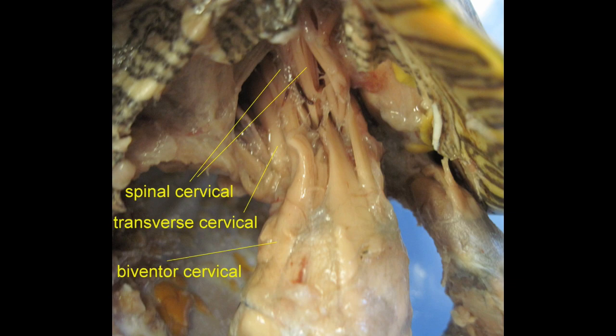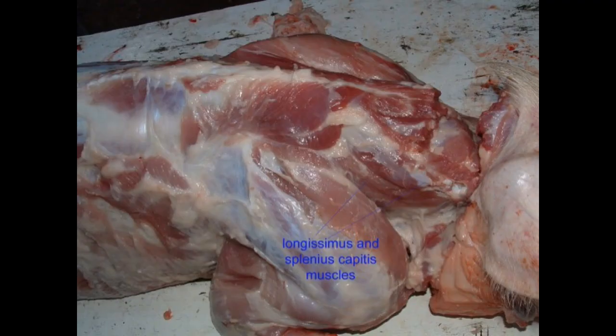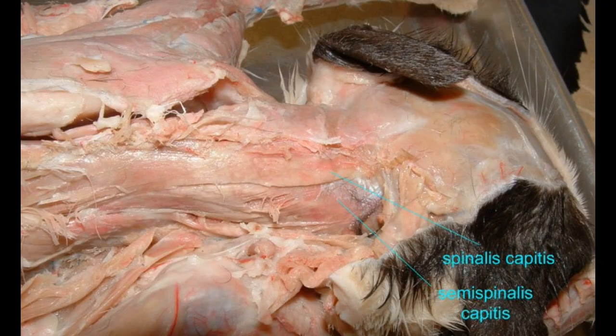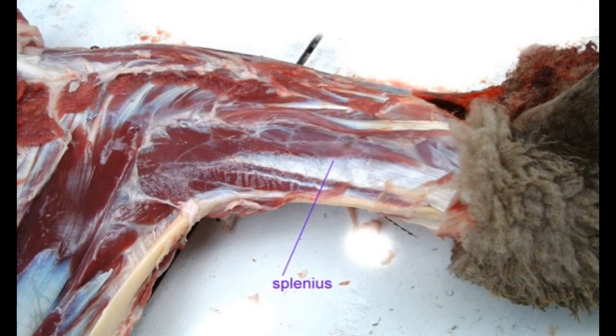The epaxial musculature also contributes to a few small muscles, such as the intraspinalis, and a few muscles of the neck, as evident in the cervicus capitis of the turtle, and also the splenius, found in the pig, the cat, and the sheep.